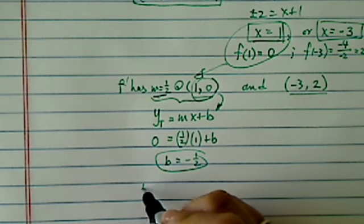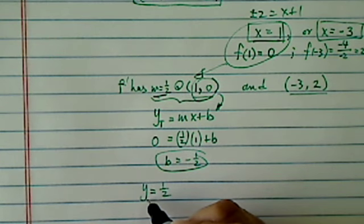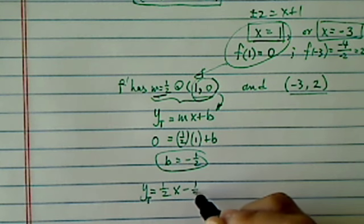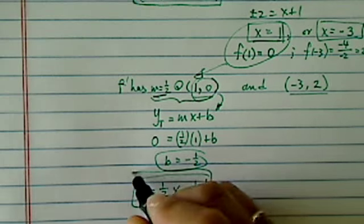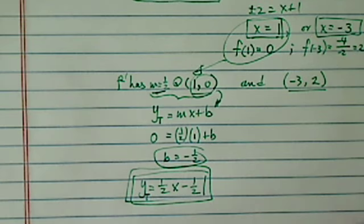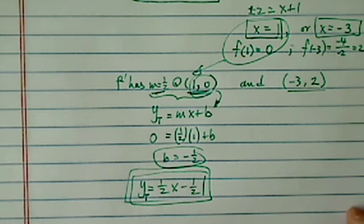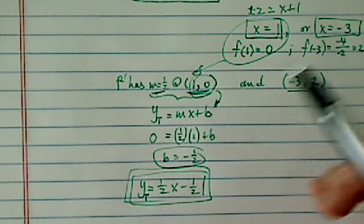So first tangent line here is y is equal to tangent, y equal to a half of x minus a half. That's one tangent line, which is parallel to the line we were given, and also the curve has a point, so the tangent line is at this point.